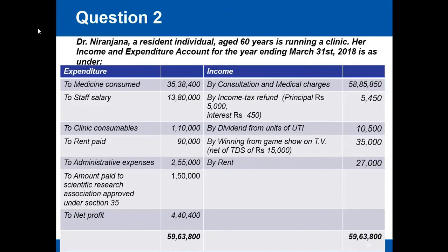Question number two. Dr. Niranjana, a resident individual aged 60 years, is running a clinic. Her income and expenditure account for the year ended 31st March 2018 is as under. On the income side, she received rupees 58 lakhs 85 thousand 850 by way of consultation and medical charges, and rupees 5,450 by way of income tax refund, which includes an interest of rupees 450.